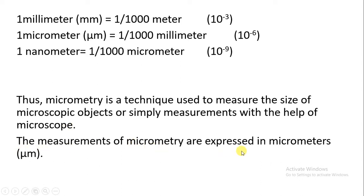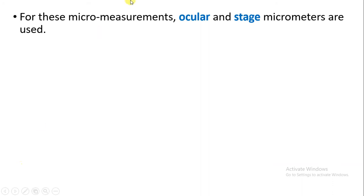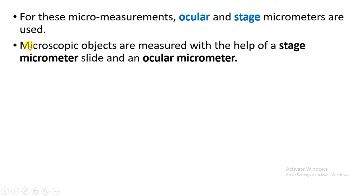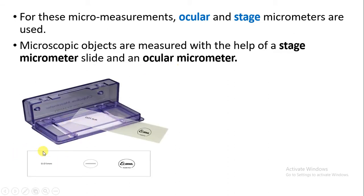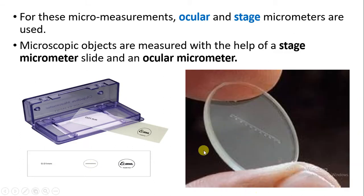The measurements of micrometry are always expressed in micrometers. All these measurements require an ocular and stage micrometer. When we use micrometry, we need two micrometers — the very first is the ocular micrometer and the second is the stage micrometer. Microscopic objects are measured with the help of the stage micrometer slide and ocular micrometer. This is called a stage micrometer slide — you can see it is a slide with a measurement line. And this is called an ocular micrometer.